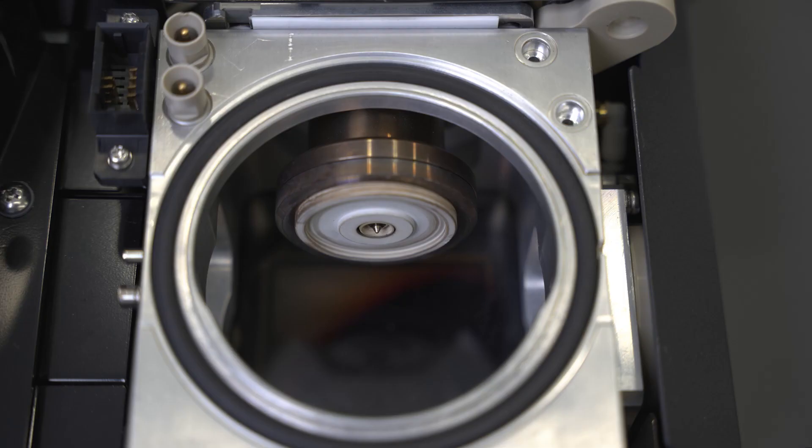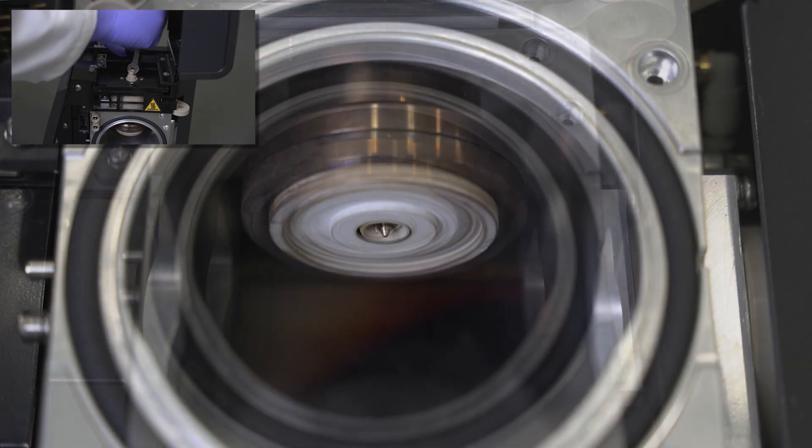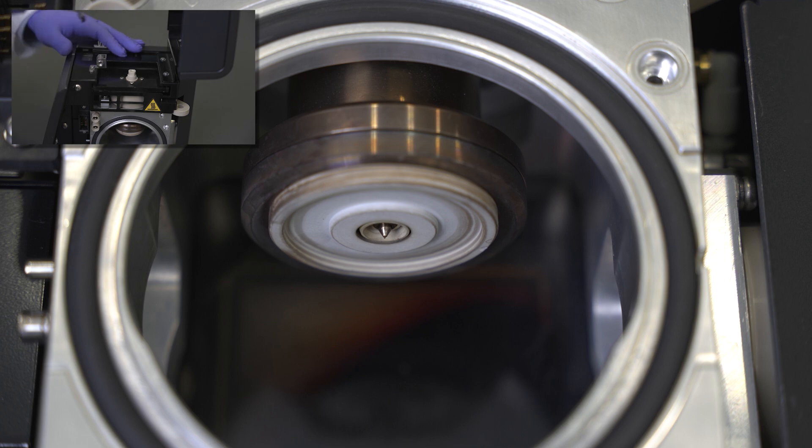Adjust the ESI spray needle protrusion to 0.5 to 1 millimeter by making the needle flush with the tip and turning the assembly clockwise. Each 180 degree turn extends the needle by 0.5 millimeters. Add the locking nut to secure the capillary in place.